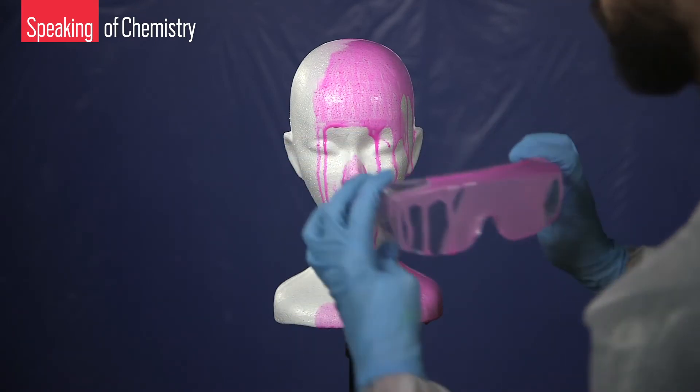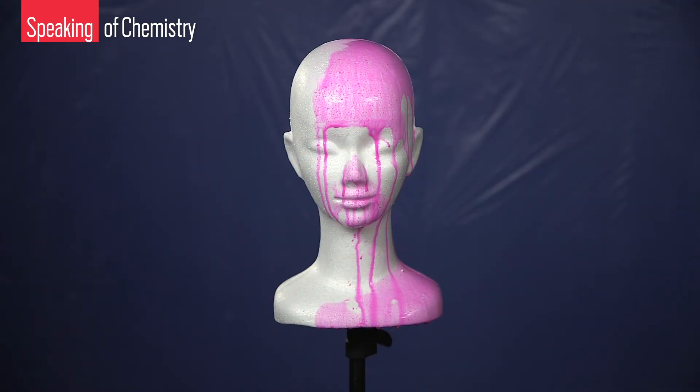Side shield safety glasses may protect against flying debris, but, as you can see, paint still dripped down Polly's forehead into her eyes.